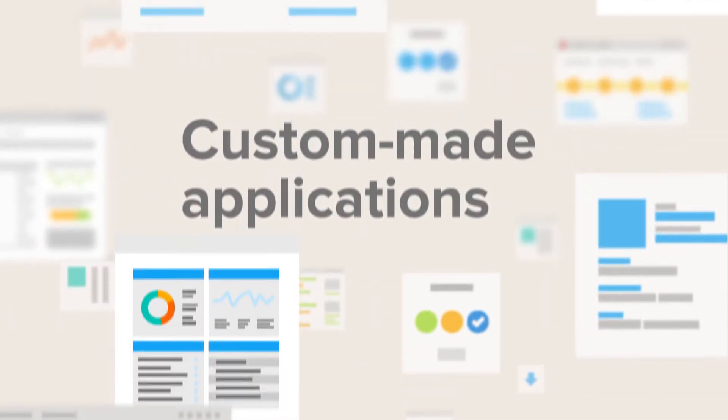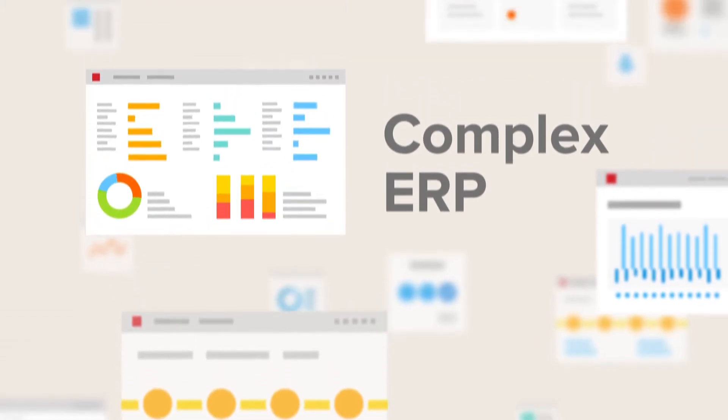Let's start with what Infor Mongoose is. It's a rapid application development framework that allows you, the user, to quickly and easily build out applications — whether they're extensions, stand-alone, mobile solutions, or portal solutions — all in one simple framework, which means you don't have to use any other tools to fulfill everything that you're doing for your organization.